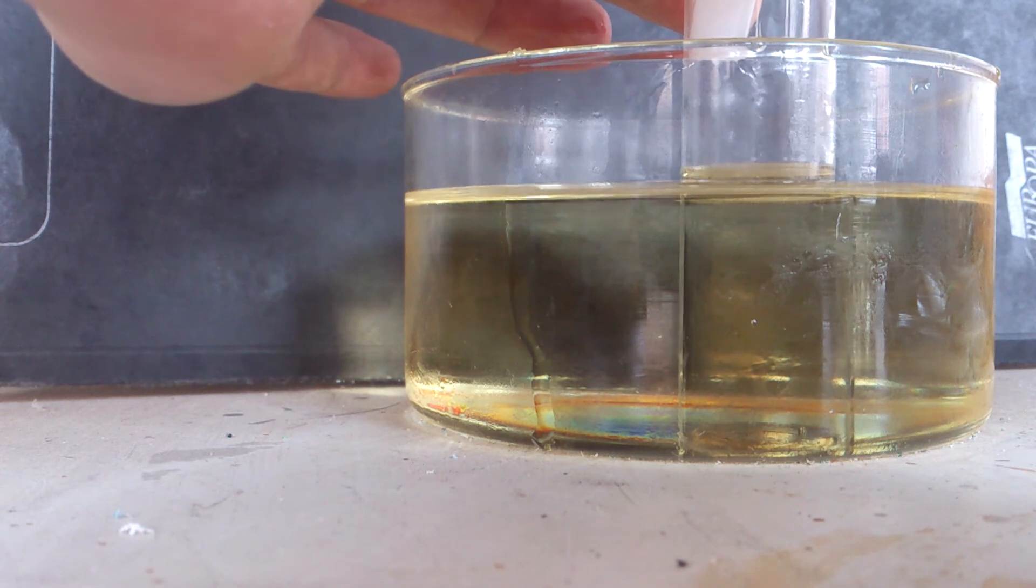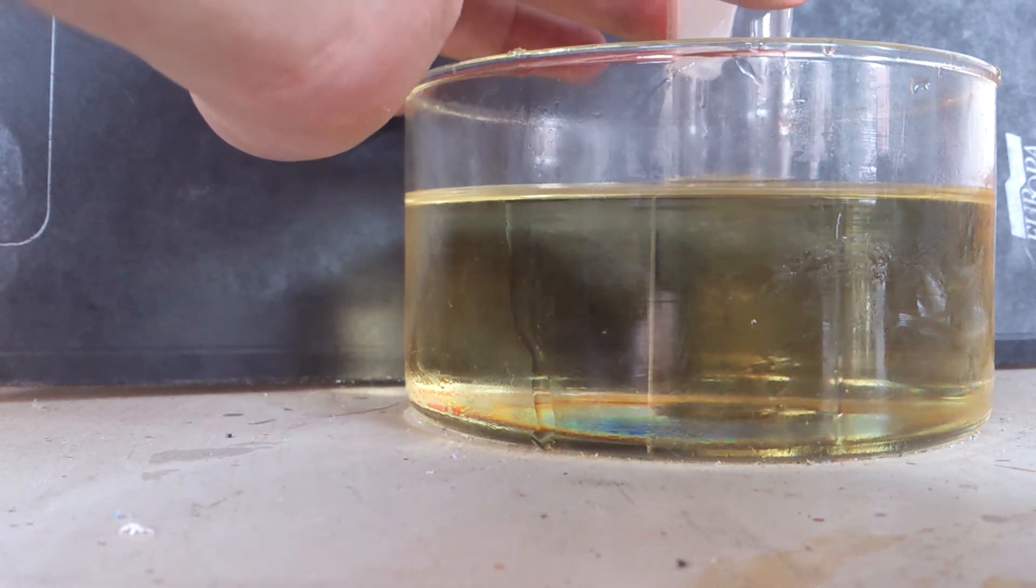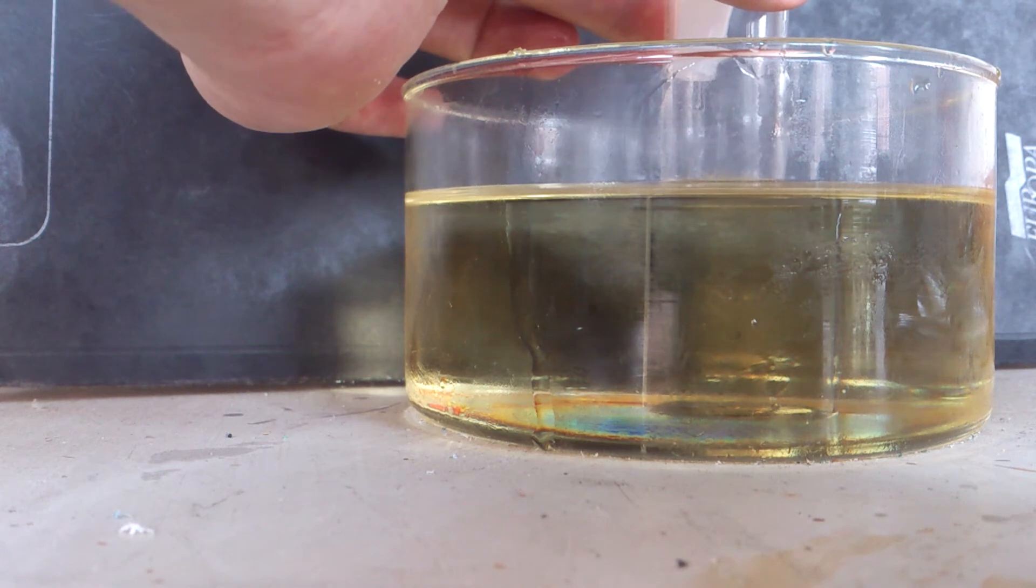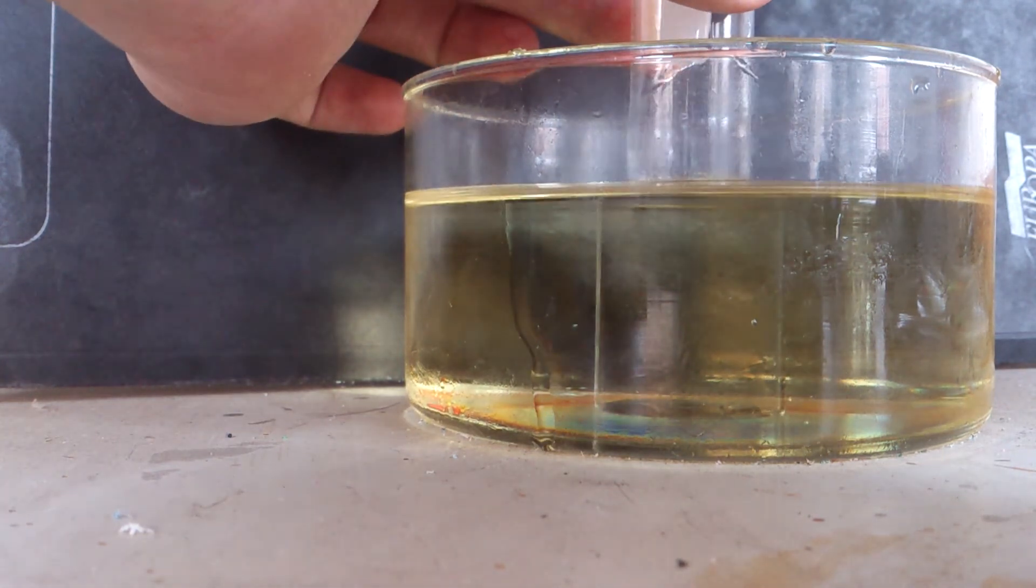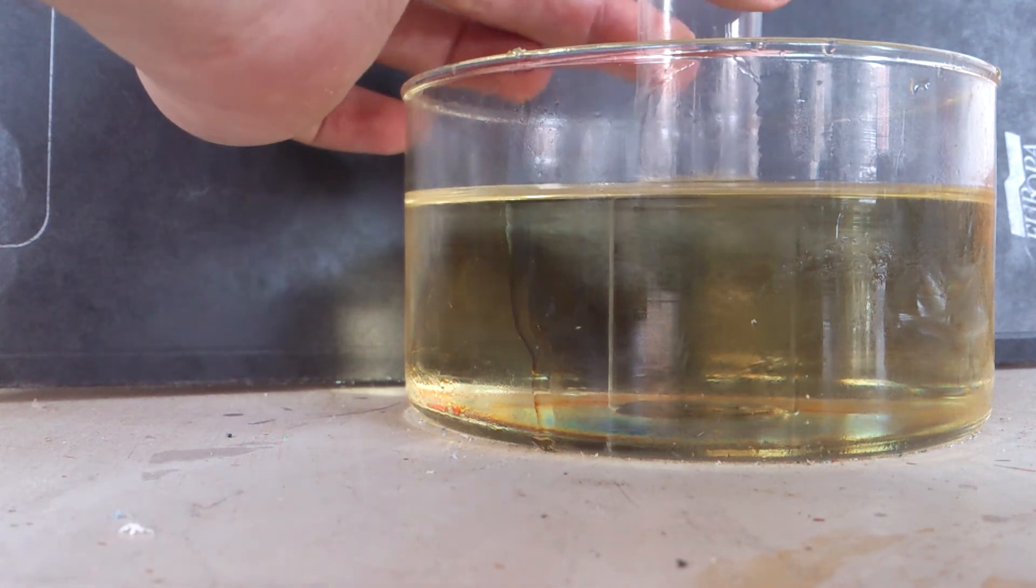And this is because now everything inside has got the same refractive index, and so light passes through in exactly the same way. As you can see, it's really hard to see the Pyrex now.